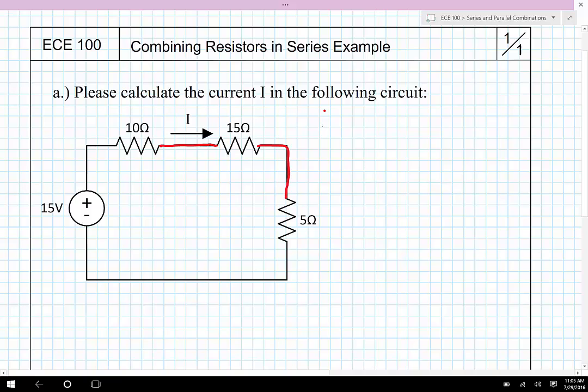So I can actually calculate the equivalent resistance for all three of those resistors. It'll be 10 ohms plus 15 ohms plus 5 ohms. That's going to end up being a total of 30 ohms.